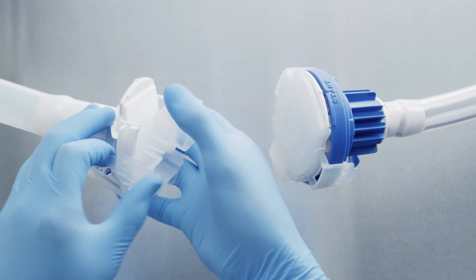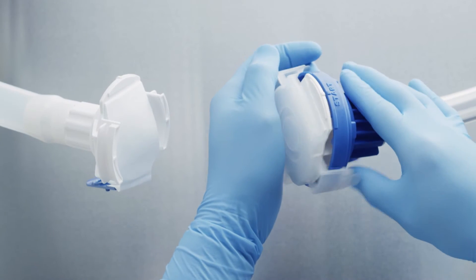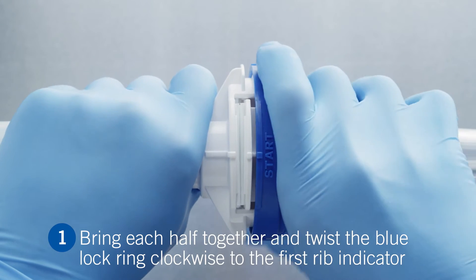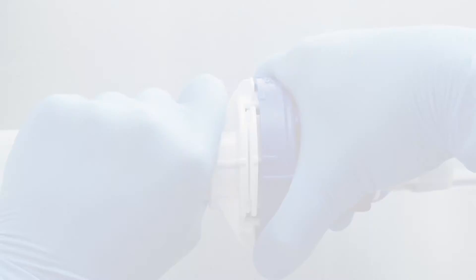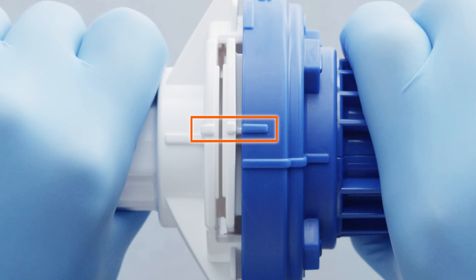Remove the protective cover on each connector half. Bring each half together and twist the blue lock ring clockwise until a click is heard. Alignment of the small blue rib indicator with the white rib indicator confirms the rotation is complete.